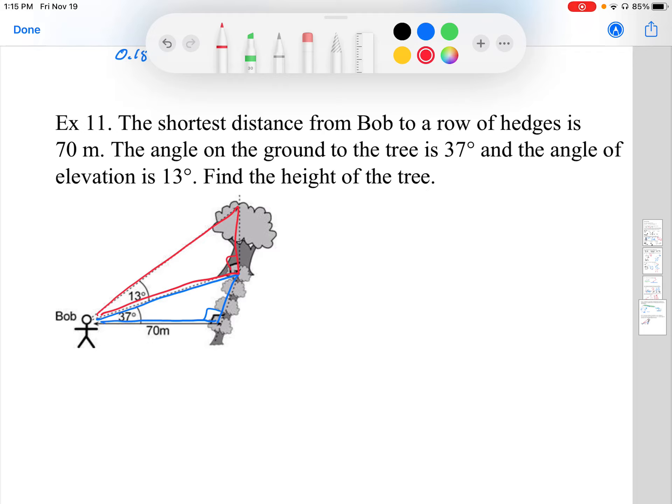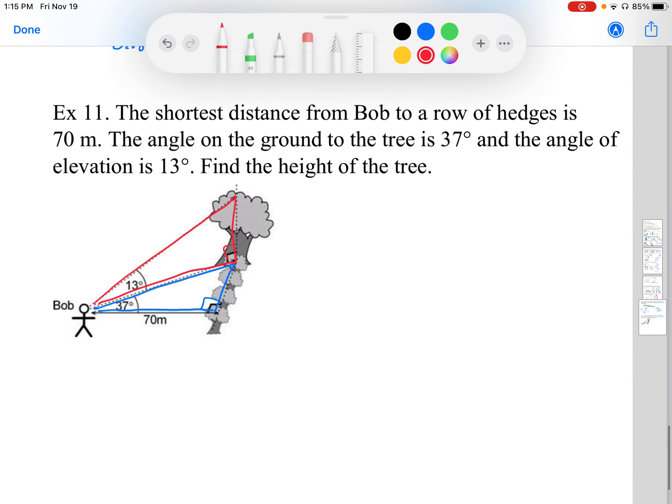So we first make sure we understand the diagram and that it's actually three-dimensional. We have a flat triangle on the ground and we have a triangle standing up. We've been given one measurement of 70 meters long and we've been given an angle in the blue triangle and an angle in the red triangle. We're going to use this to find out the height of the tree.